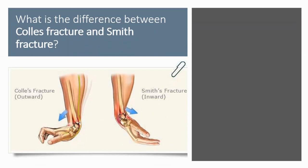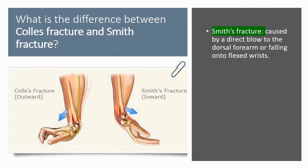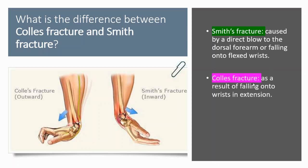What is the difference between Colles Fracture and Smith Fracture? Smith Fracture is caused by a direct blow to the dorsal forearm or falling onto flexed wrists — and flexed wrists is the key difference, because Colles Fractures happen from falling with the wrist in extension. Smith Fractures are less common than Colles Fractures.